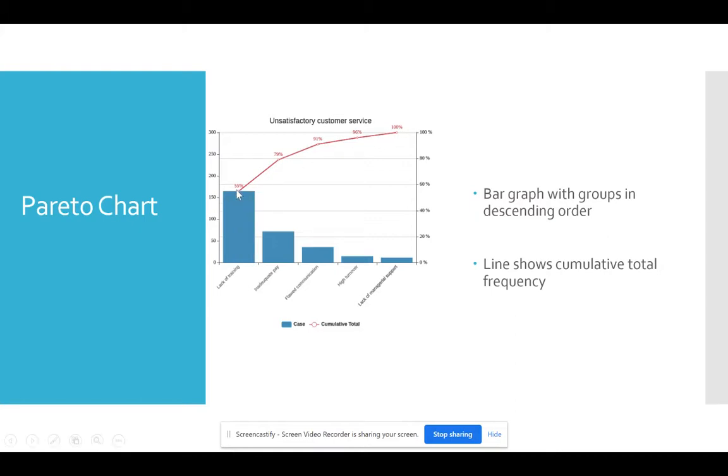And so, for example, I know that lack of training is 55% in terms of people who had unsatisfactory customer service. I then know, and I may have to estimate, but then I have inadequate pay, flawed communication, and so forth. So a Pareto chart is still a bar graph, but you do it in order of frequency from high down to low. So it helps you to immediately see, oh, here's where our biggest problem is.